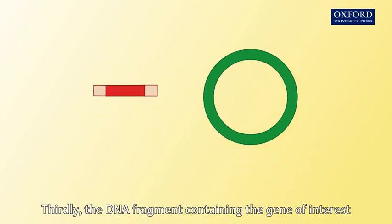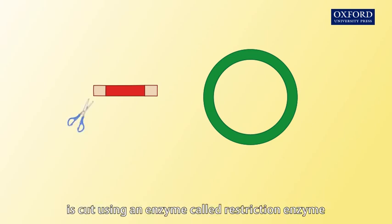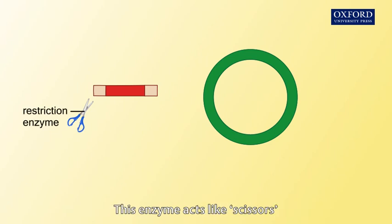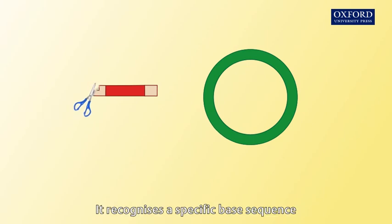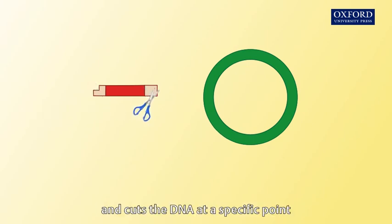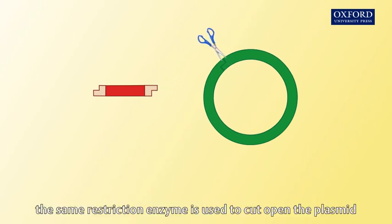Thirdly, the DNA fragment containing the gene of interest is cut using an enzyme called restriction enzyme. This enzyme acts like scissors — it recognizes a specific base sequence and cuts the DNA at a specific point. On the other hand, the same restriction enzyme is used to cut open the plasmid.